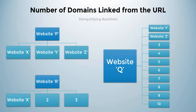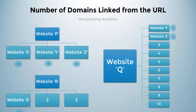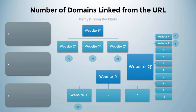If you assume P, Q, and R all have a link juice of 30 points, then website P gives 30 divided by 3, equal to 10 points to each of X, Y, and Z. Website Q gives 30 divided by 10, equal to 3 points to each link it links to, so Y and Z each get 3 points. Website R gives 30 divided by 3, equal to 10 points to each link it points to, so X gets 10 points from website R. Now let's add all the points: X equals 10 plus 0 plus 10, equal to 20 points. Y and Z each equal 10 plus 3 plus 0, equal to 13 points.